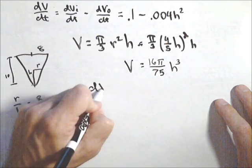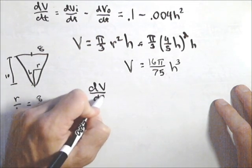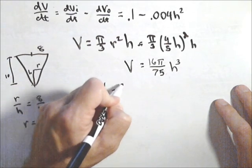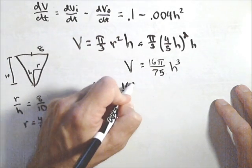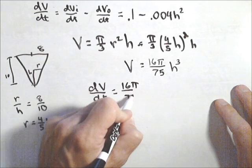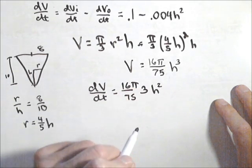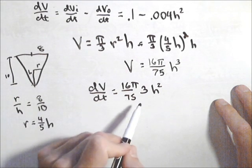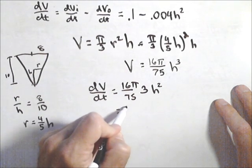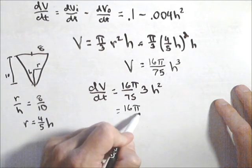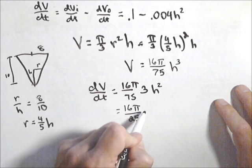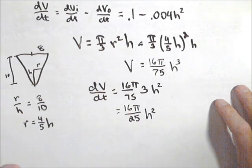So I'm going to take the derivative of both sides with respect to time. So I get dV/dt equals 16π/75 times 3h² dh/dt. We can simplify that a little bit. We're going to get 16π/25 h² dh/dt.